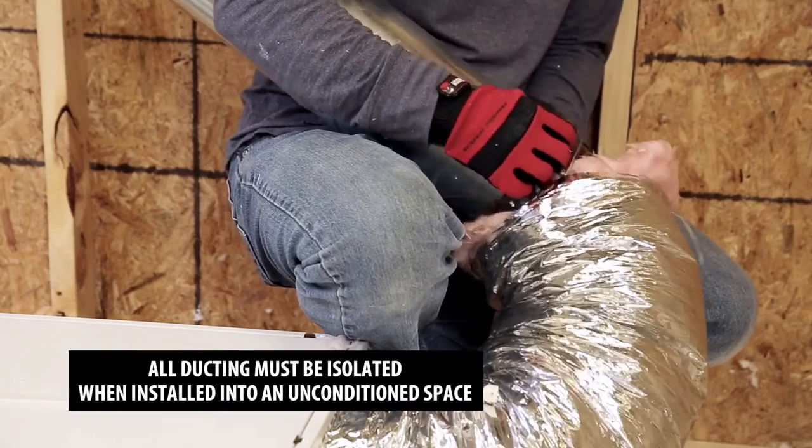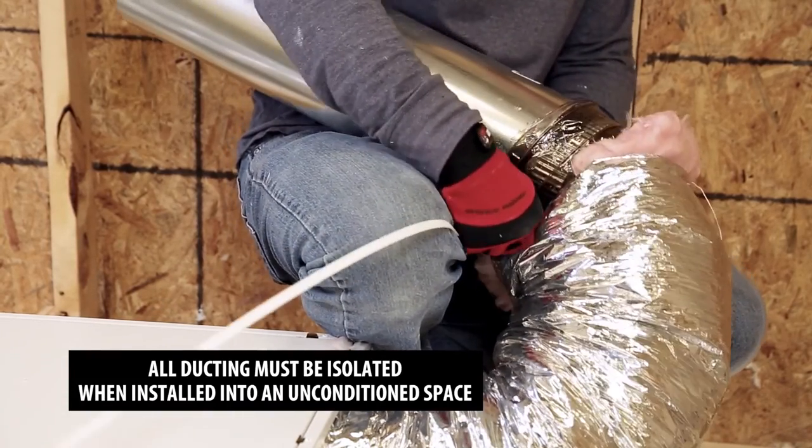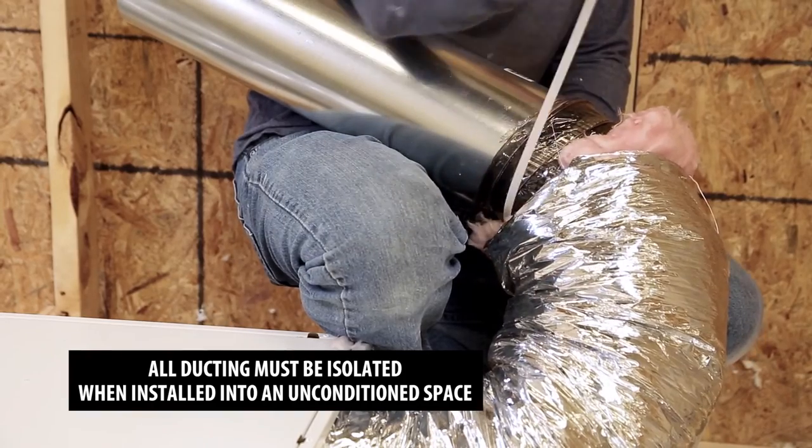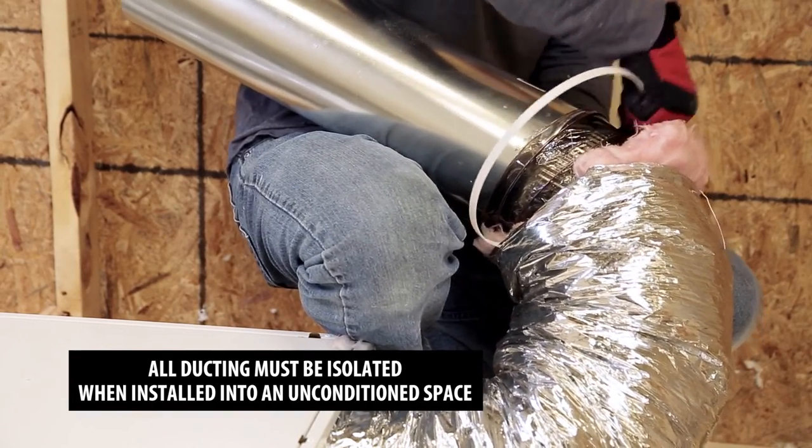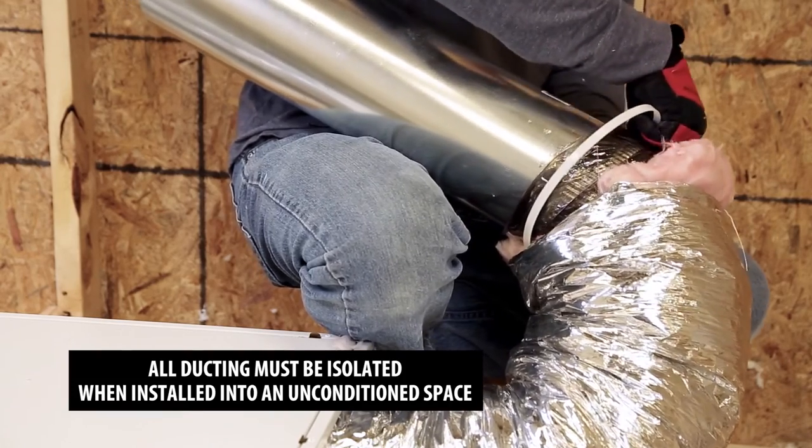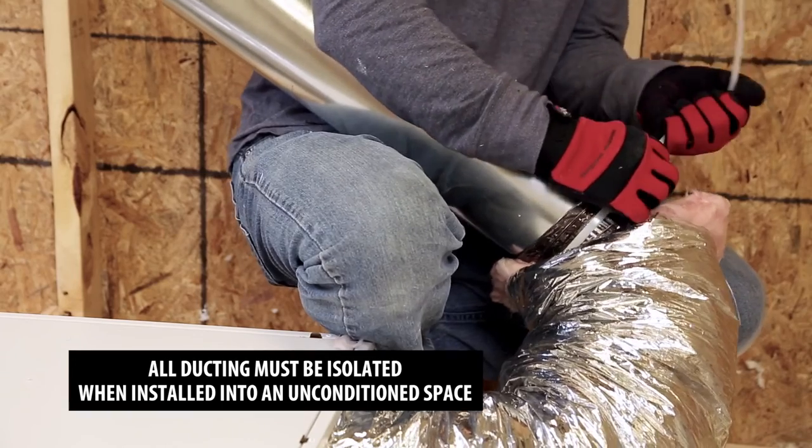Flexible ducting is recommended. If you must connect rigid ducting to the unit ports, use a section of flexible duct at least 6 inches long to avoid transmitting vibrations. Connect the flexible duct to the rigid duct using a tie wrap and foil tape. Never use screws to attach rigid ducting directly to the unit ports.